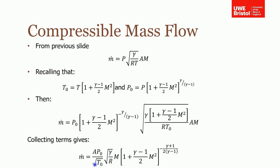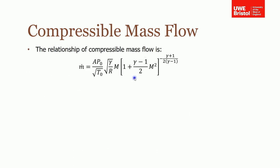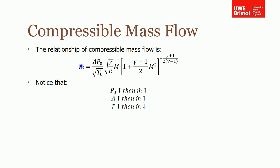Now it looks quite complex, but we've got everything expressed in terms of things we can easily measure. The mass flow is a function of: the cross-section area, which we should know; the stagnation pressure and temperature, which are fairly easy to know; the properties of the fluid; and the fluid velocity expressed non-dimensionally as a Mach number. If we increase the stagnation pressure, the mass flow rate increases — that makes sense. If a nozzle is connected to a reservoir, the stagnation pressure of the reservoir is basically the static pressure there, so increasing reservoir pressure increases mass flow rate.